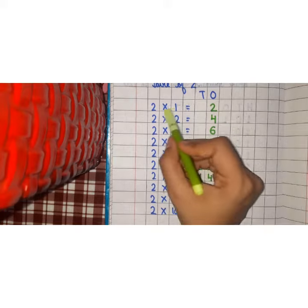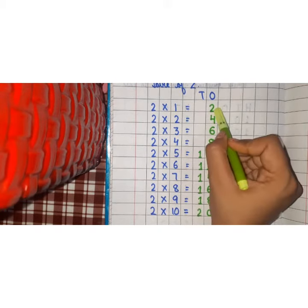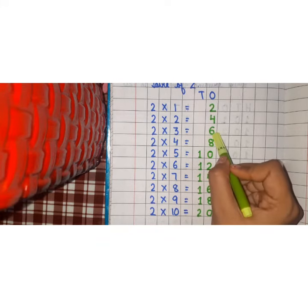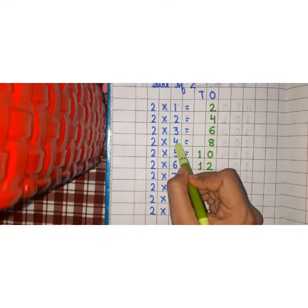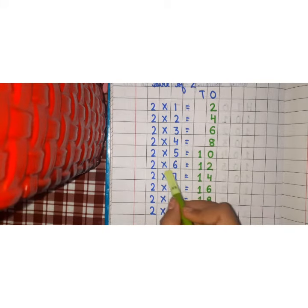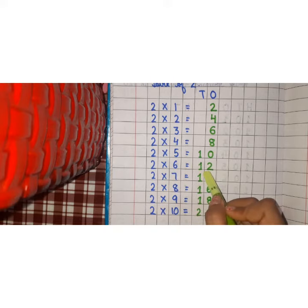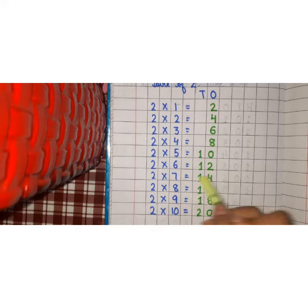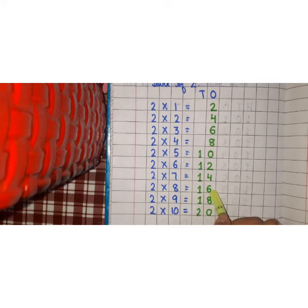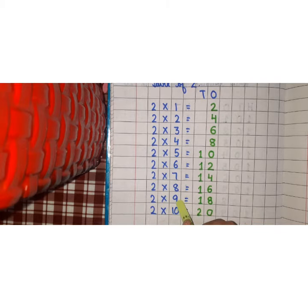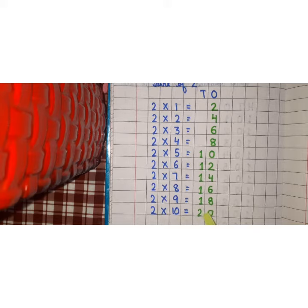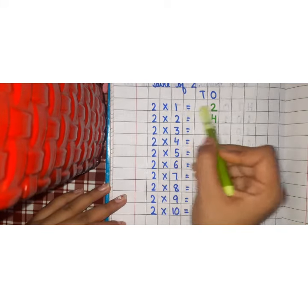2 ones are 2. 2 twos are 4. 2 threes are 6. 2 fours are 8. 2 fives are 10. 2 sixes are 12. 2 sevens are 14. 2 eights are 16. 2 nines are 18. 2 tens are 20.